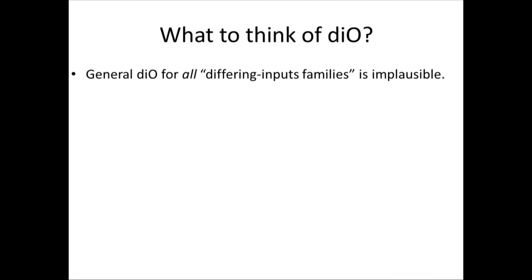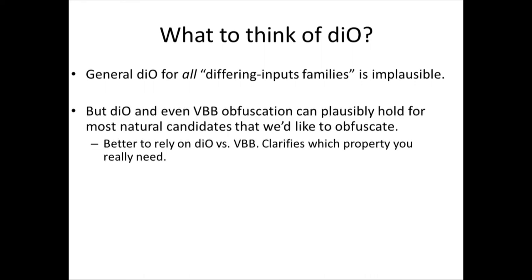To conclude, we give fairly good evidence that differing inputs obfuscation for all differing inputs families is impossible and cannot be achieved. But DIO and even VBB obfuscation — even very strong notions — can plausibly hold for most natural candidates we'd like to obfuscate, just not in general. It still seems better to rely on DIO rather than VBB, as it's a more specific assumption that clarifies what property you really need in the proof. The search continues for a useful, plausible, general obfuscation assumption.